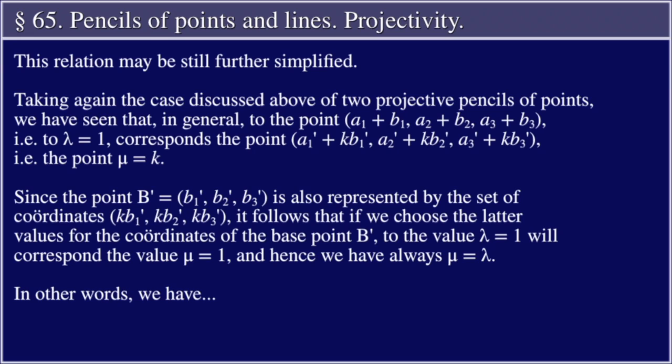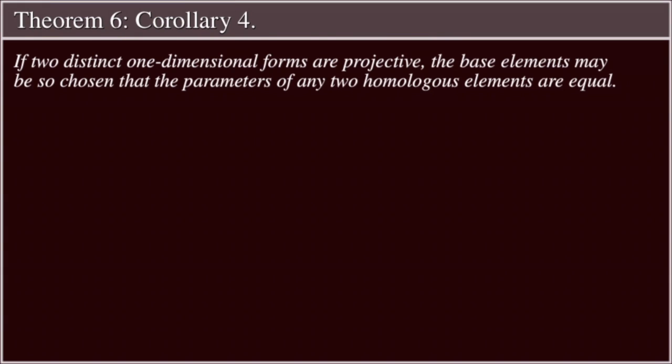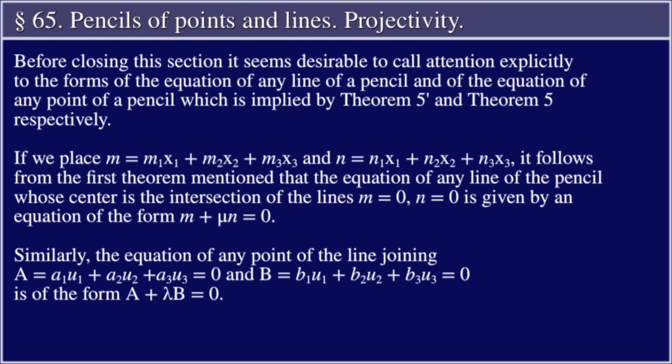In other words, Corollary 4: If two distinct one-dimensional forms are projective, the base elements may be so chosen that the parameters of any two homologous elements are equal. Before closing this section, it seems desirable to call attention explicitly to the forms of the equation of any line of a pencil of lines and of the equation of any point of a pencil, which is implied by Theorem 5′ and Theorem 5 respectively.